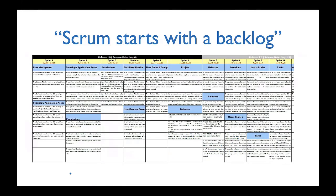Unfortunately Scrum starts with a backlog. I've seen backlogs already arranged into sprints and releases where all the stories are solutions — things people are going to build — with nothing to do with what problem they're trying to solve. Rushing into a solution by building a backlog at the beginning is problematic. We do have to build a backlog, but we should build it when we have knowledge of the problem we're trying to solve.